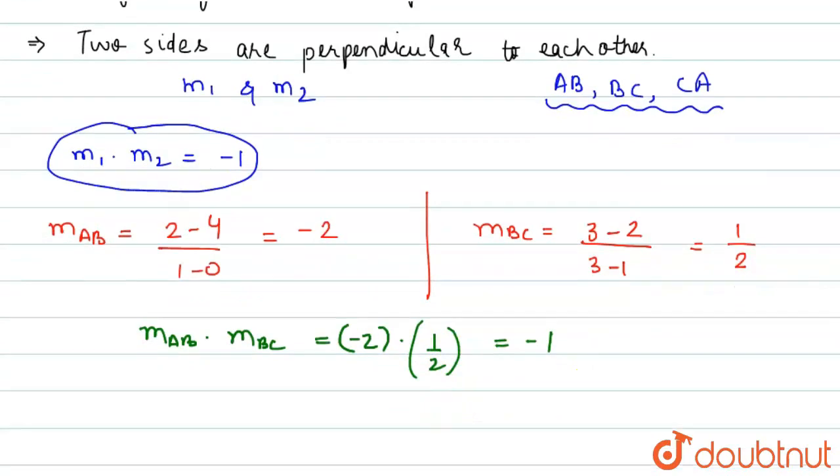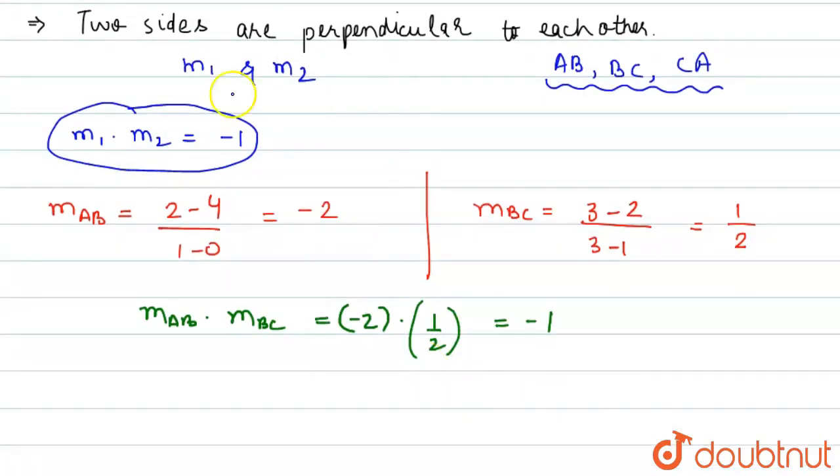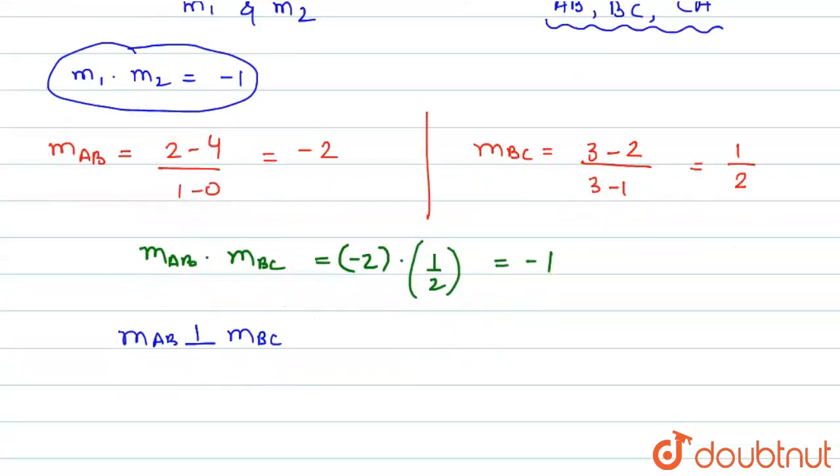Therefore, M_AB is perpendicular to M_BC. That means the angle between them is 90 degrees. Therefore, ABC is a right-angled triangle, and we can also draw the triangle like this.